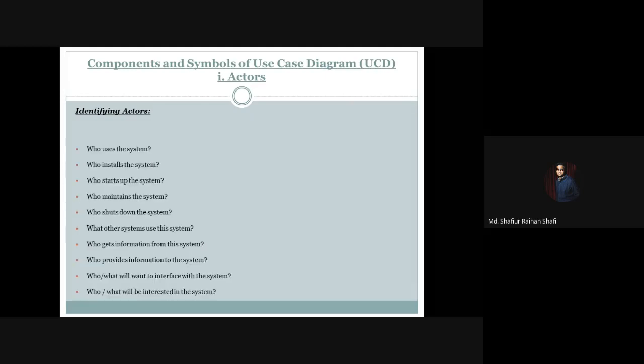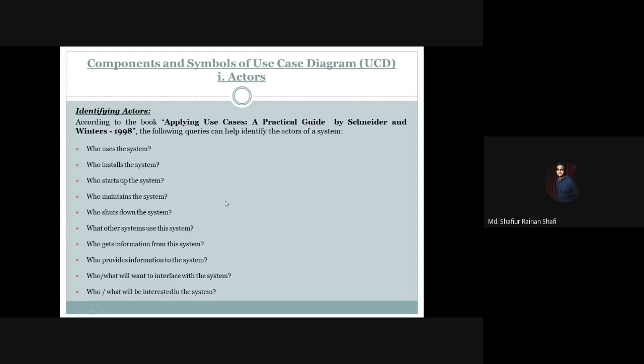Now let's look at the perspectives or situations of how to identify actors — how we can identify actors in a use case diagram. According to the book 'Applying Use Cases: A Practical Guide' by Snyder and Winters, published in 1998, the following queries can help us determine what kinds of actors will be present in our system.